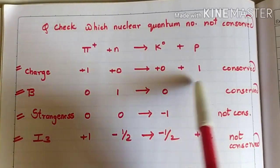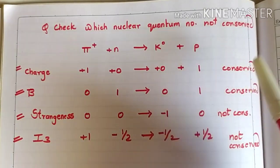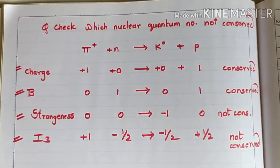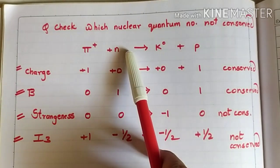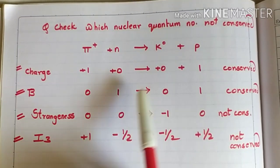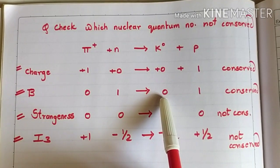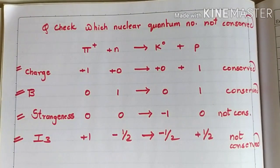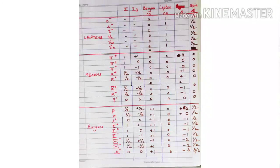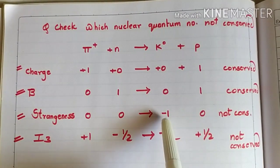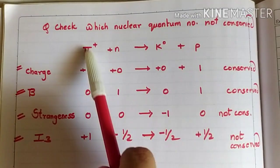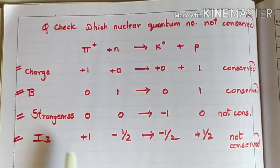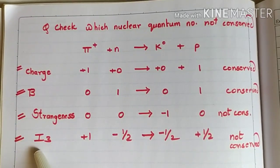Checking charge first: pi positive has charge plus one, neutron has charge zero — sum is plus one on the left. K-naught has charge zero, proton has charge one — sum is plus one on the right. Charge is conserved. For baryon number: pi positive is a meson so B equals zero, neutron has B equals one — sum is one. K-naught is a meson so B equals zero, proton has B equals one — sum is one. Baryon number is conserved. Checking strangeness: pi positive has S equals zero, neutron has S equals zero, K-naught has S equals minus one, proton has S equals zero. The minus one on the right is unbalanced, so strangeness is not conserved.